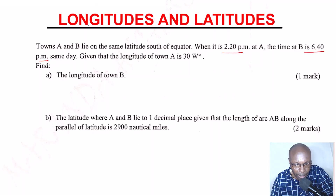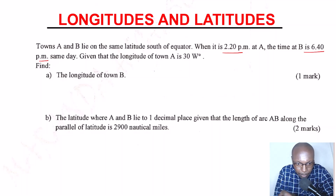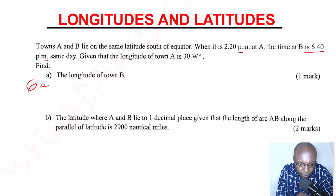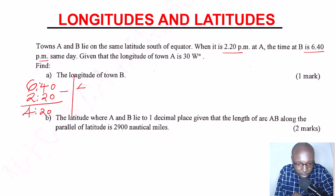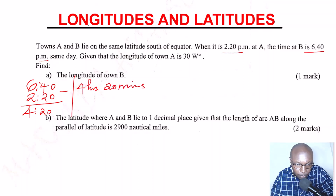Let's begin by getting the time difference between these two places. B is 6:40pm, then we subtract 2:20pm. Just subtract directly, and this gives the time difference between the two places: 4 hours and 20 minutes.